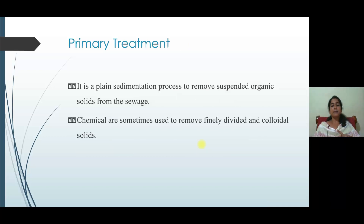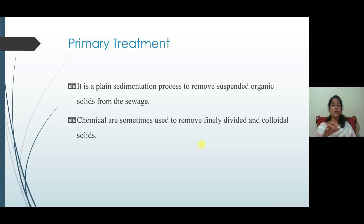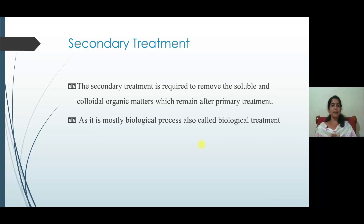In primary treatment, the main process is plain sedimentation, which is applied to remove suspended organic solids from the sewage. Chemicals are sometimes used to remove finely divided and colloidal solids for more accurate sedimentation of suspended particles. Secondary treatment is required to remove the soluble and colloidal organic matter which remains after primary treatment. As it is mostly a biological process, it is also called biological treatment.